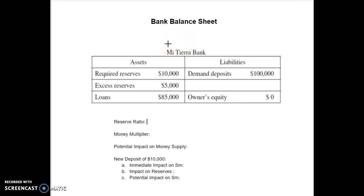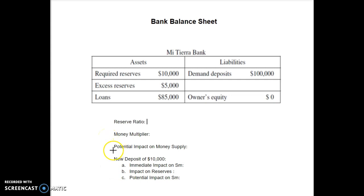We're going to look at what to do when you're given something like this. Oftentimes you'll be asked to do these main steps: find the reserve ratio, find the money multiplier, potential impact on the money supply, and then what happens if we put in a new deposit or if we have a withdrawal.